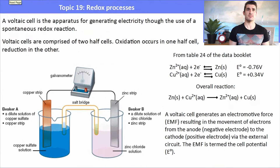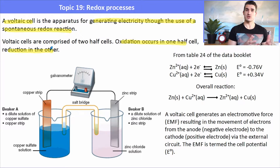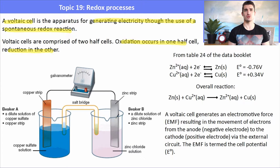Some standard level revision: a voltaic cell is an apparatus for generating electricity through a spontaneous redox reaction. Voltaic cells are comprised of two half cells — oxidation occurs in one and reduction in the other. Here we have a copper/Cu²⁺ half cell and a zinc/Zn²⁺ half cell connected by a salt bridge, which completes the circuit and helps to balance the ions.